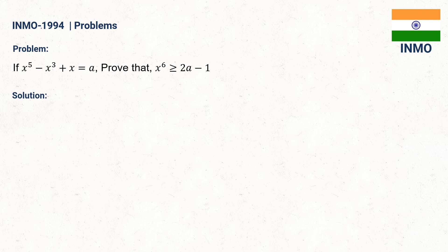As you can see here, there is a greater than or equal to symbol. That means it is an AM-GM inequality question. And to solve this, we will use the given data and do the reverse approach. The given data is x^5 - x^3 + x = a, which we can write as x(x^4 - x^2 + 1) = a.